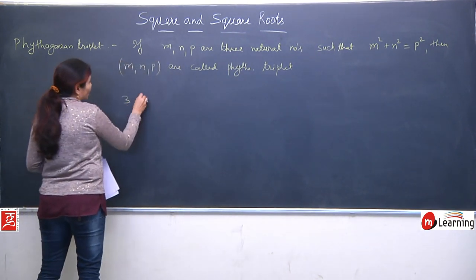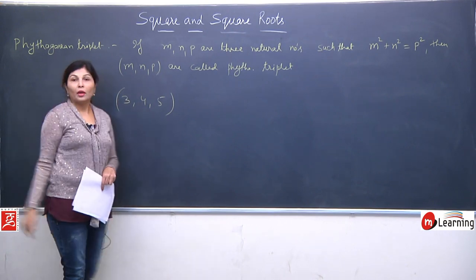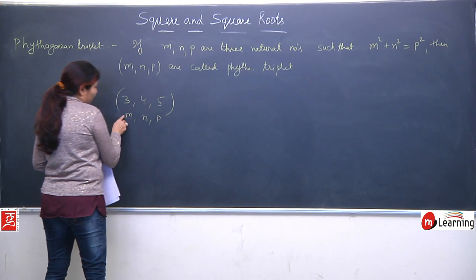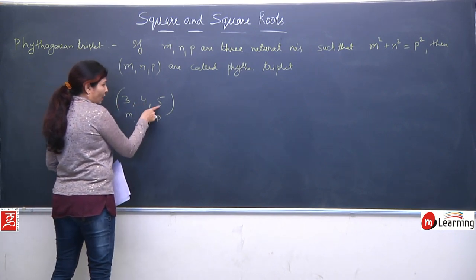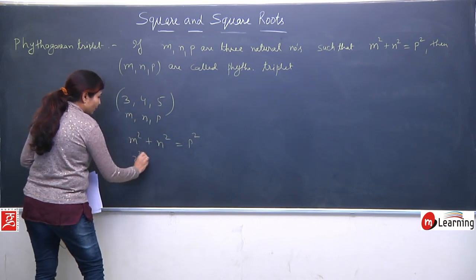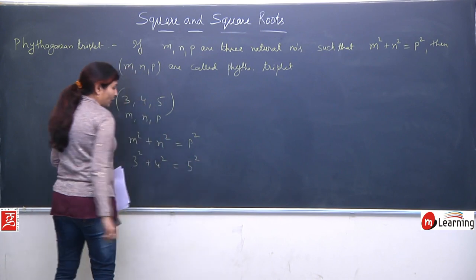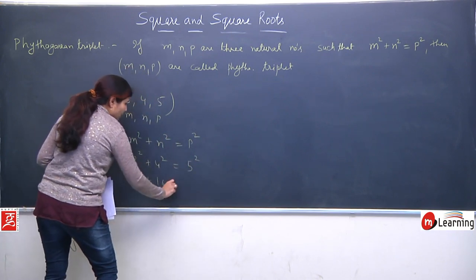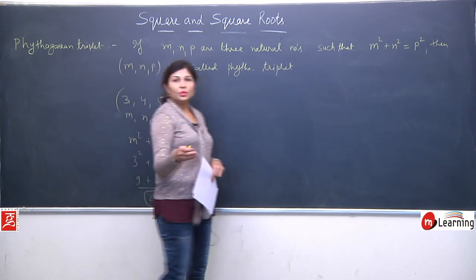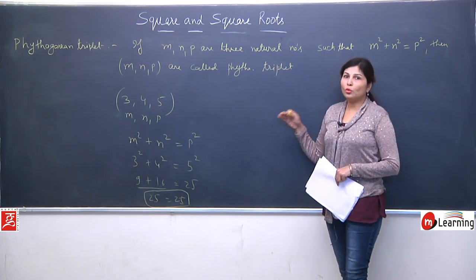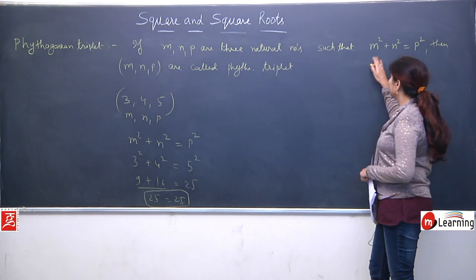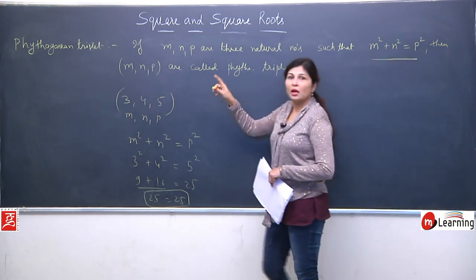Like I am taking numbers 3, 4, 5 — sab se pehle toh ye triplet hai. But whether they are Pythagorean or not, we decide through the property. Our 3 numbers are M, N, P — so I take 3 as M, 4 as N, and 5 as P. So I can write M² + N² = P². Let's check: 3² + 4² should equal 5². 3² is 9, 4² is 16, and 5² is 25. When we add LHS: 9+16 = 25, so LHS equals RHS — the condition is satisfied. So 3, 4, 5 are called a Pythagorean triplet.